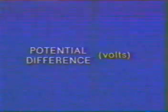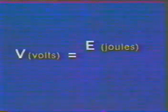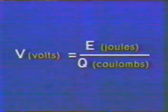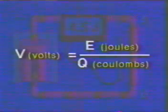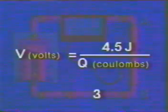Potential difference is measured in volts and is given the symbol V. Potential difference is equal to the energy in joules transferred by each coulomb of charge. Suppose in this example we find that three coulombs of charge flowing through the heating element cause the element to give off 4.5 joules of heat energy. We can calculate the potential difference between A and B using our equation. So, in this circuit, each coulomb of charge loses 1.5 joules of energy as it flows from A to B. Since potential difference is measured in volts, we can say that the potential difference across AB is 1.5 volts.